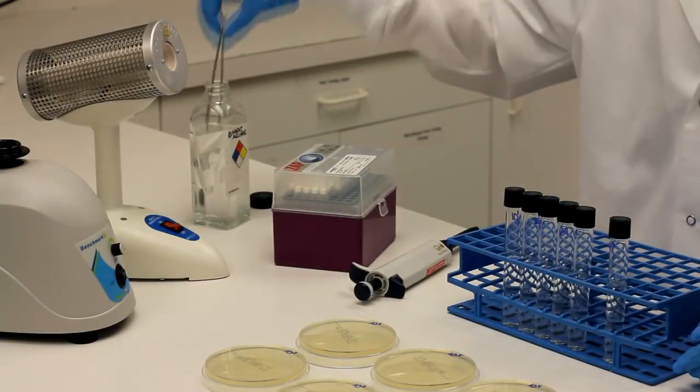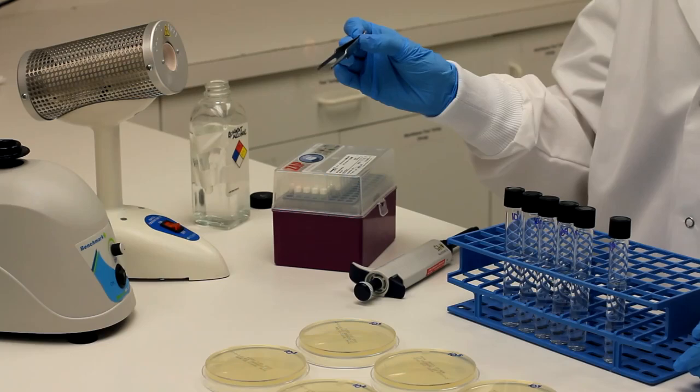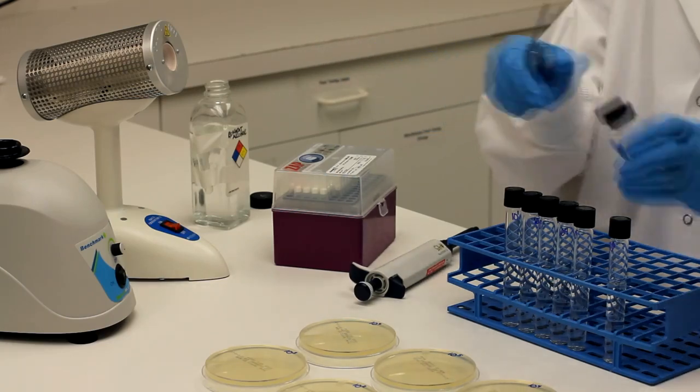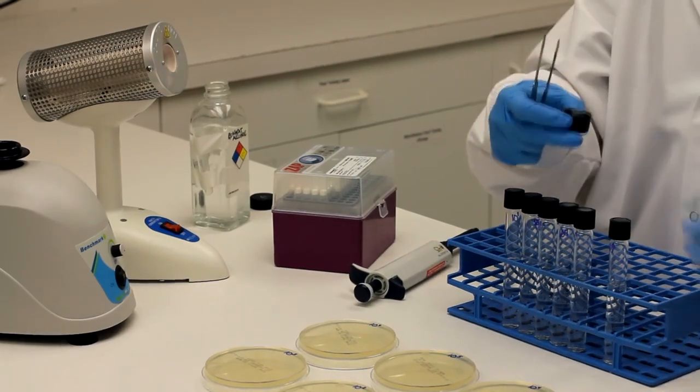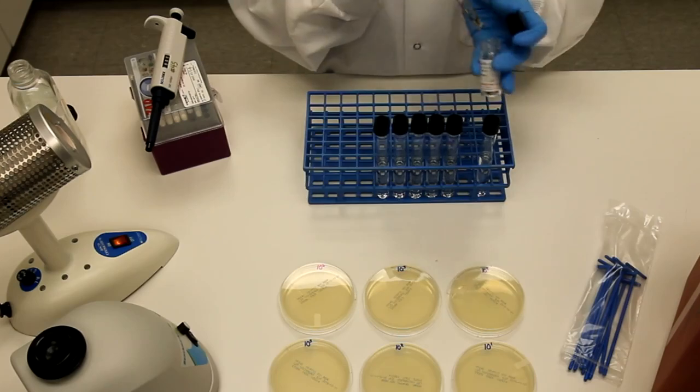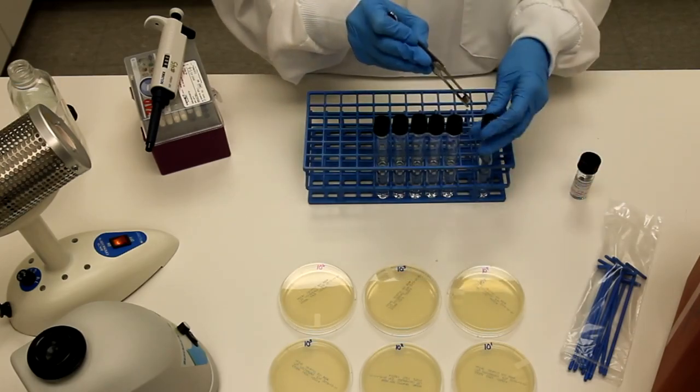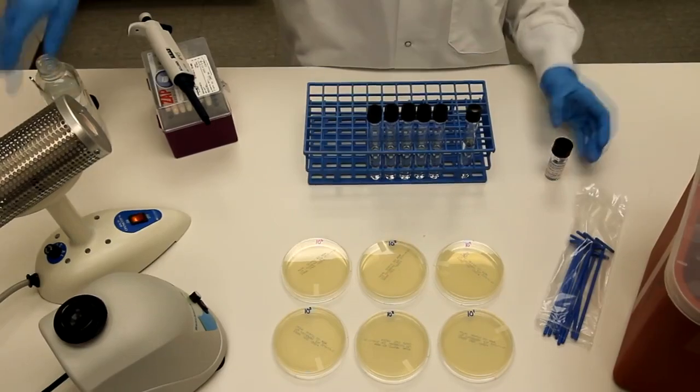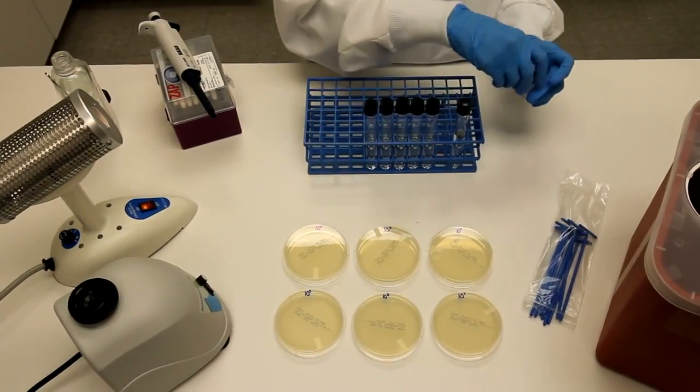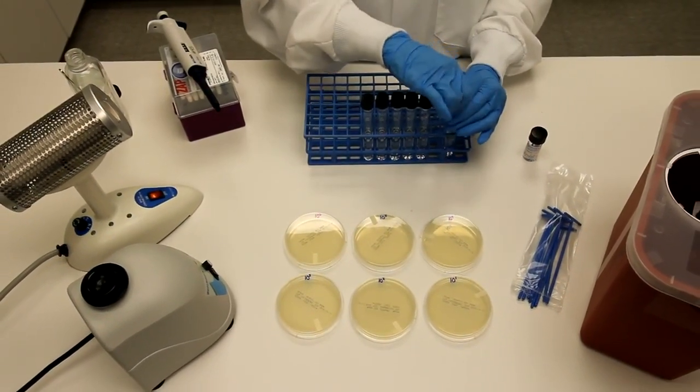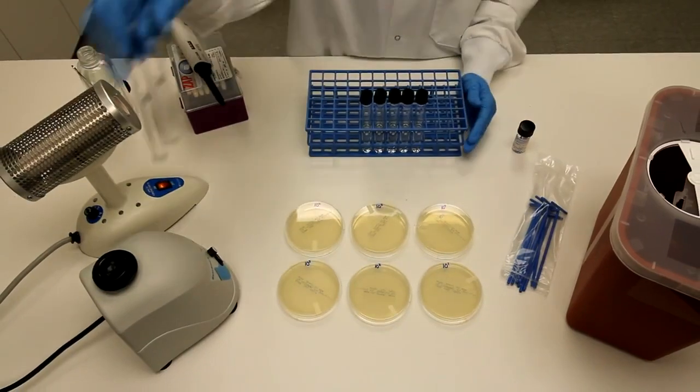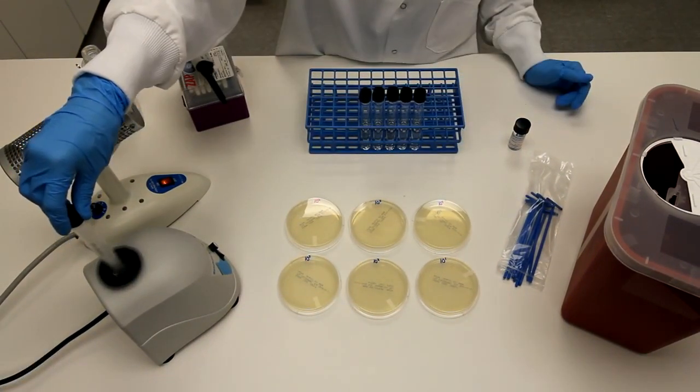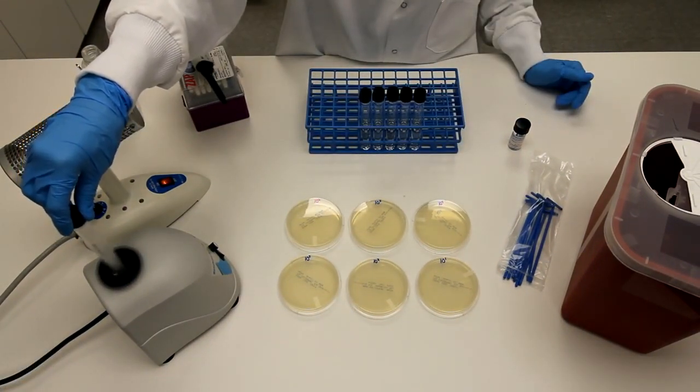Next, using sterile forceps, place one pellet into 10 milliliters of pre-warmed phosphate buffer. Vortex the microorganism suspension to achieve a homogenous suspension.